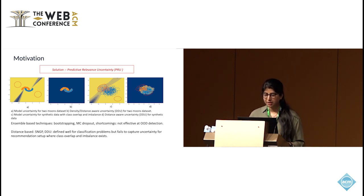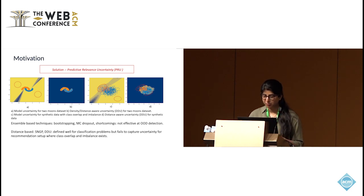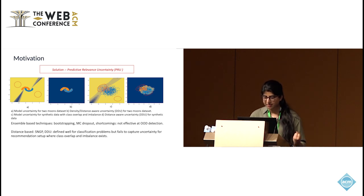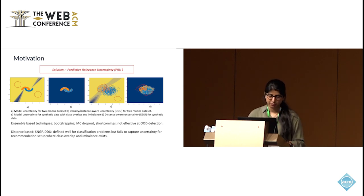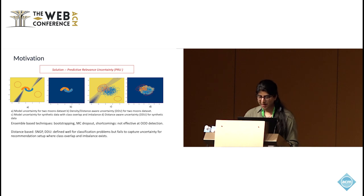Distance-aware uncertainty can be thought of as a way to quantify the distance of the testing example from the training data manifold. Here, yellow denotes the low uncertainty region, blue denotes the high uncertainty region, and the red circle denotes the failure mode for the uncertainty algorithm. If you look closely at figure A, you'll see that the uncertainty is lower for the red circle region, but it should be higher because it's away from the training data manifold. The distance-aware uncertainty tries to solve this problem — in figure B, the failure mode present in deep ensembles and MC dropout doesn't exist, and it captures uncertainty better for the classification scenario.